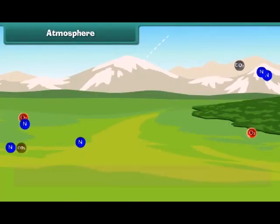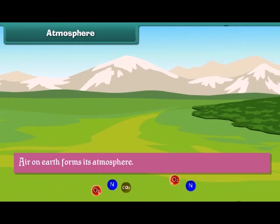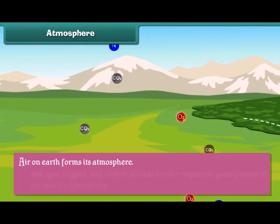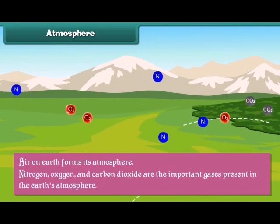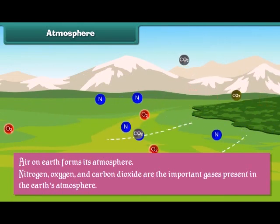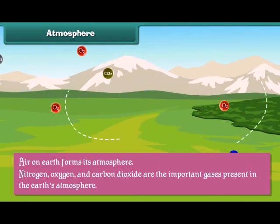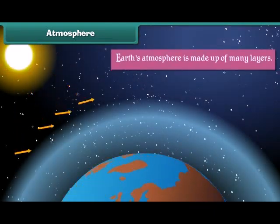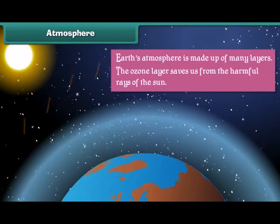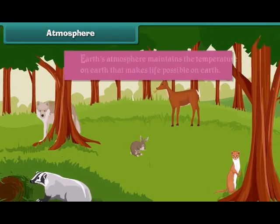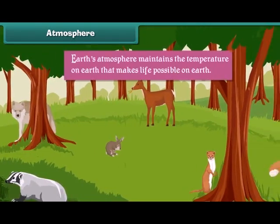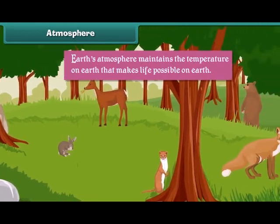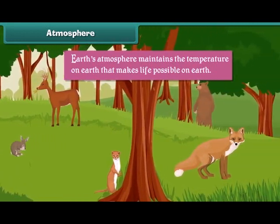Atmosphere: Air on Earth forms its atmosphere. Nitrogen, oxygen, and carbon dioxide are the important gases present in the Earth's atmosphere. Earth's atmosphere is made up of many layers. The ozone layer saves us from the harmful rays of the sun. Earth's atmosphere maintains the temperature on Earth that makes life possible.